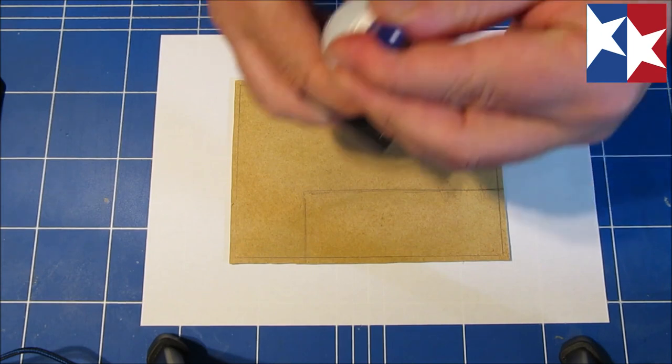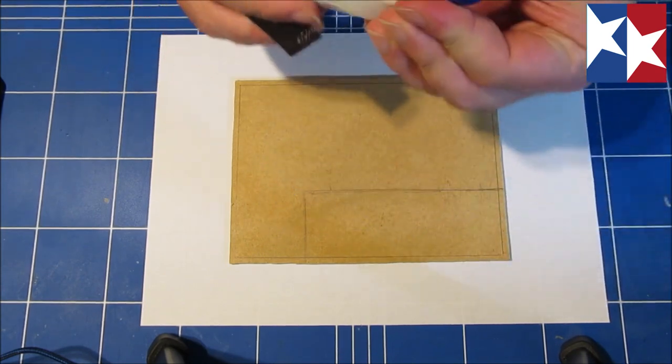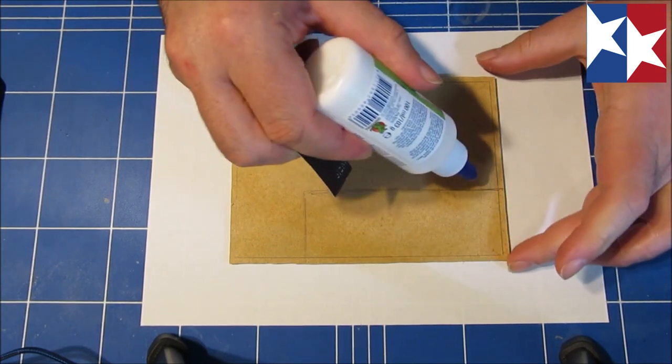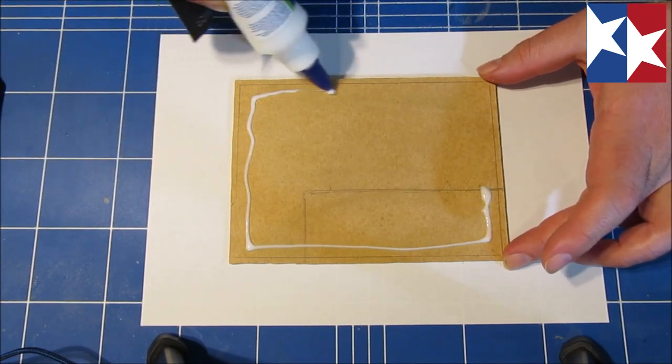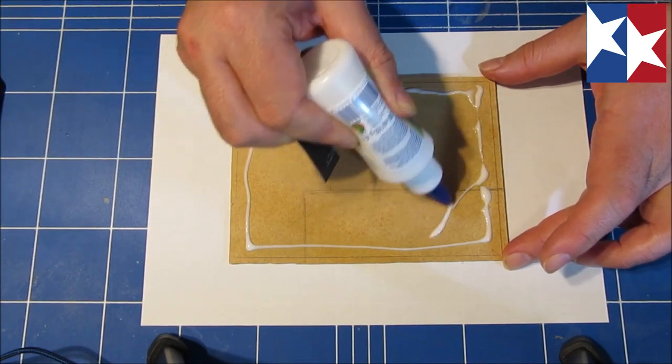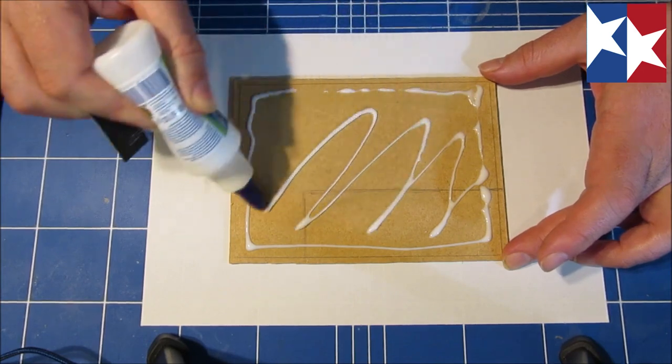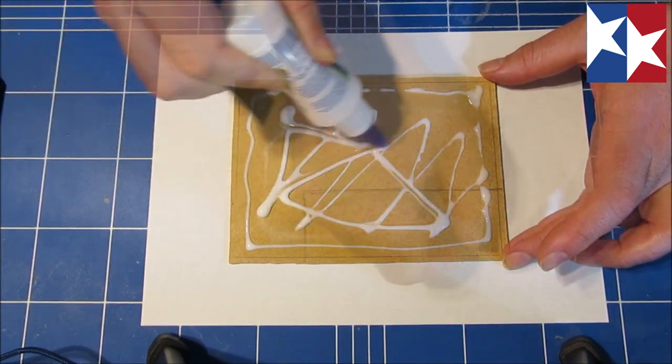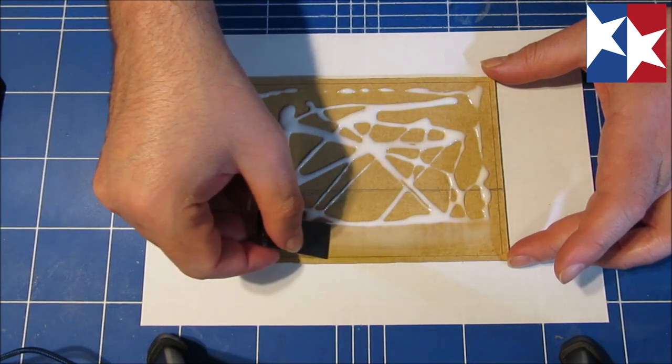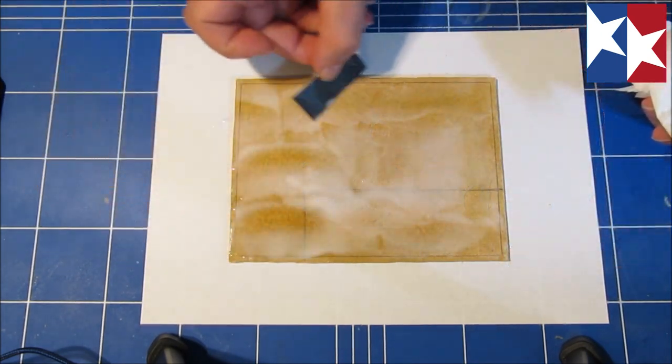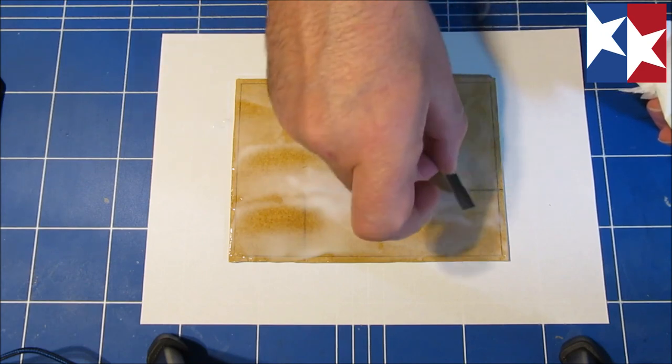The next step I'm going to take some white glue and then just apply it to the surface here. Smear it out. Let's make sure every spot is covered.